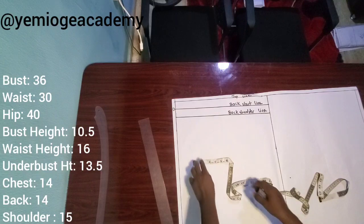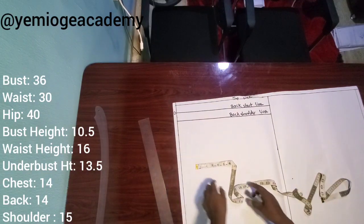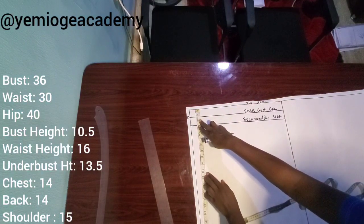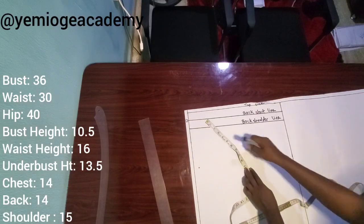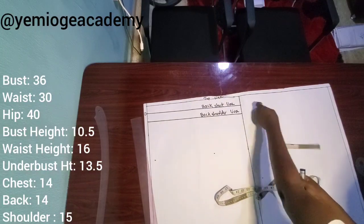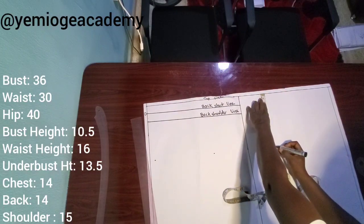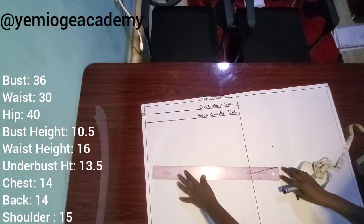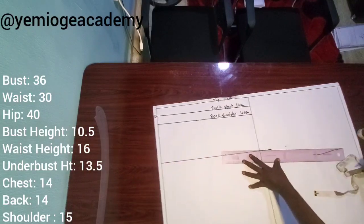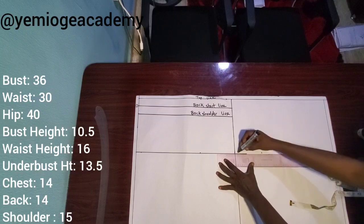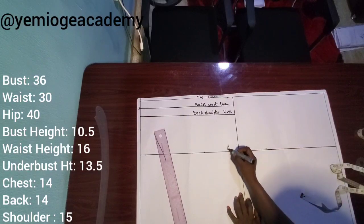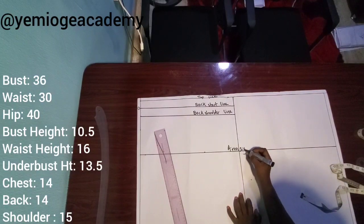From the top line, I'm going to measure the arm skyline. How do I get the arm skyline? The arm skyline is the bust height minus 1.5 inches. In this case, the bust height is 10.5, so minus 1.5, making 9 inches. I'm going to measure it across the paper up to the front part, because the arm skyline will run across both the back and the front. Always remember to label your lines to avoid confusion, so I label the arm skyline.